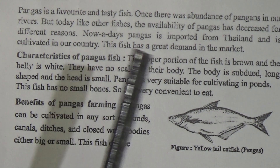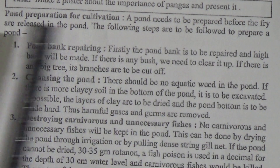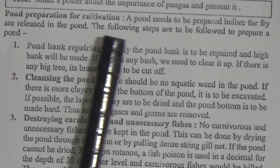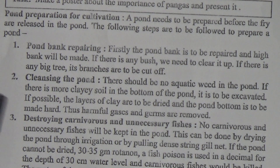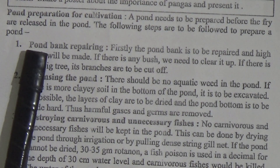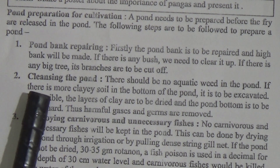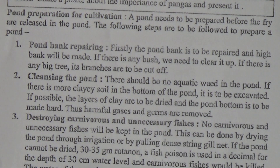The characteristics of pangas and benefits of pangas you will read from the book. Now we will go to the next point — page number 77 — it is pond preparation for cultivation. A pond needs to be prepared before the fry are released in the pond. The following steps are to be followed to prepare a pond. There are five points: pond bank repairing, cleaning the pond, destroying carnivores and unnecessary fishes, application of lime, and application of fertilizer in the pond.